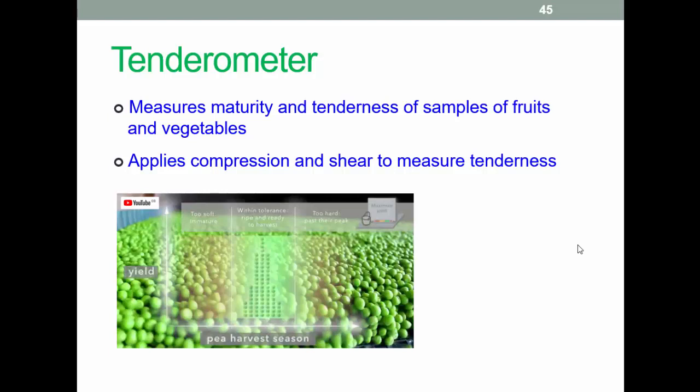Tenderometers - we all have good names for these things. These also have other applications, but they're often used to measure the stage of maturity of peas to determine whether they are ready for cropping. The device basically measures the force required to affect a shear reaction. Again, click on the image for a video link. And again, a reminder that none of these methods are needed for the OBR.